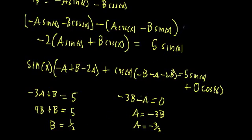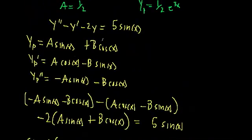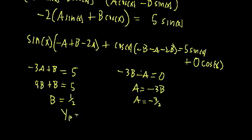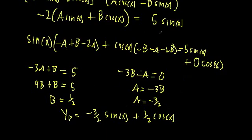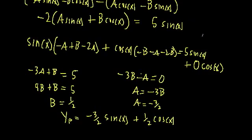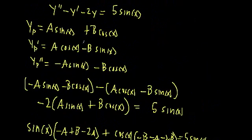We found the values A = −3/2 and B = 1/2, so our particular solution is y_p = −(3/2) sin(x) + (1/2) cos(x). The key takeaway: when the non-homogeneous term is sinusoidal, guess a particular solution that includes both sine and cosine — even if there's no cosine term on the right-hand side — because derivatives will generate cosine terms that must be cancelled.